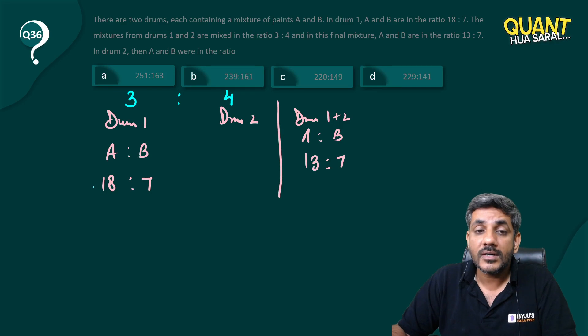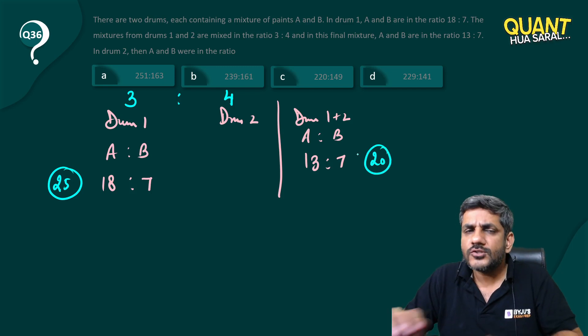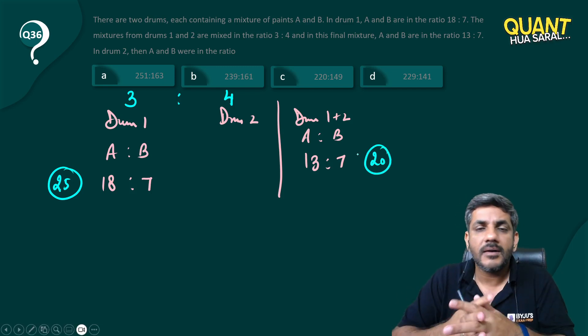What is the sum of 18 and 7? It is 25. What is the sum of 13 and 7? It is 20. These two are the only ratios given and their sums are 25 and 20.